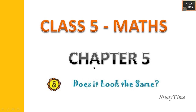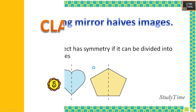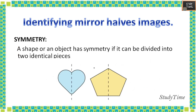First, identifying mirror halves and images. For that you have to know whether a particular object is symmetrical or asymmetrical. First we'll see what is symmetry — a shape or an object has symmetry if it can be divided into two identical pieces. See here, this is a heart shape. When you divide it, both parts are the same.